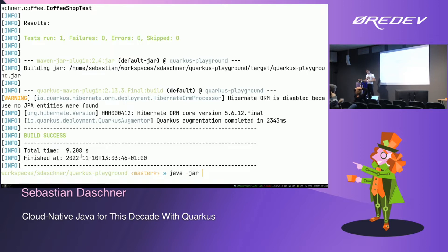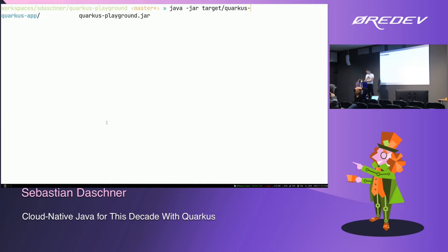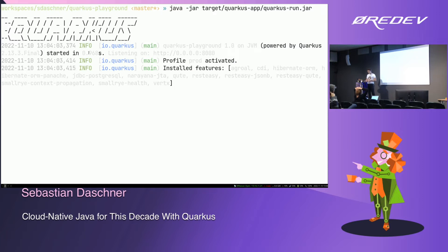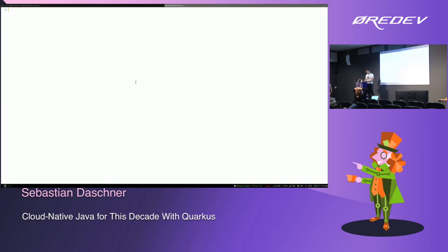It will create something under target/quarkus-app and run the quarkus-run.jar. It starts up pretty quickly — less than one second, about 0.9 seconds — and then I can curl localhost:8080/coffee and it says 'coffee'. The interesting difference to Spring and other enterprise Java runtimes is what the Maven plugin does.